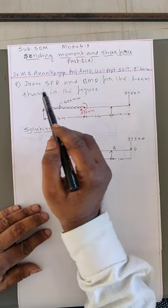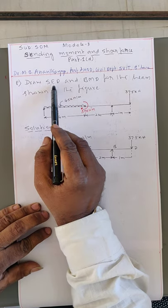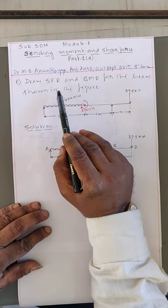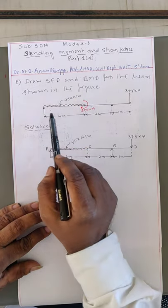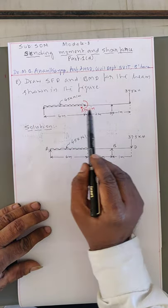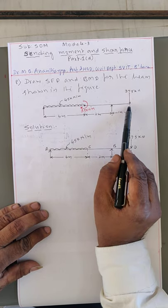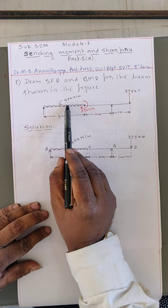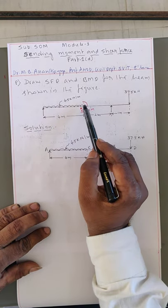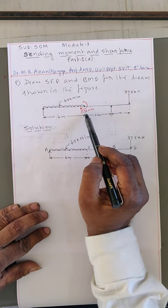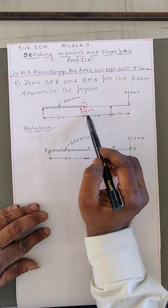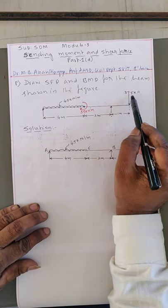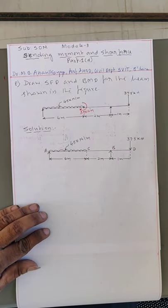The problem is: draw SFD and BMD — shear force diagram and bending moment diagram — for the beam shown in the figure. There is one simply supported end with an overhang from here to here for 4 meter length. UDL is 45 kilonewton per meter, along with a moment of 30 kilonewton meter, and a point load of 37.5 kilonewton at the free end.